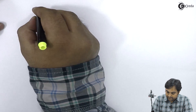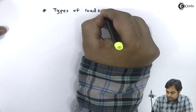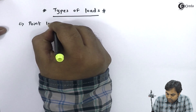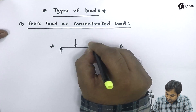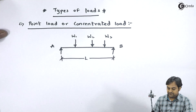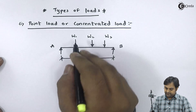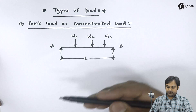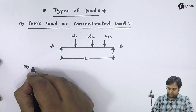Now let me give you the types of loading. Similar to the types of beam, here we have types of loads. The first one is point load or concentrated load. As we see in this diagram, here we have a simply supported beam supported at A and B. If the loading acts at a point — like W1 is acting at a point, W2 is acting at a point, similarly W3 — since the load is acting at a single point, it is called a point load or concentrated load.